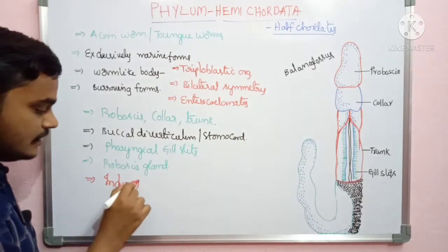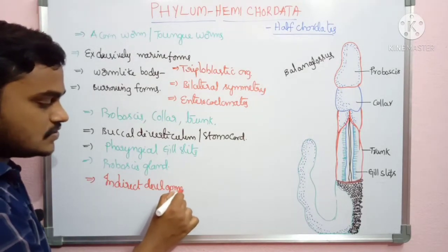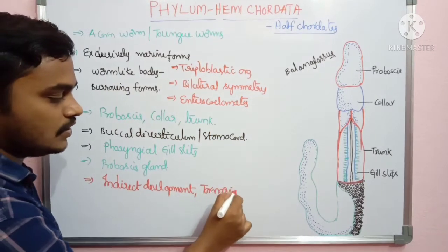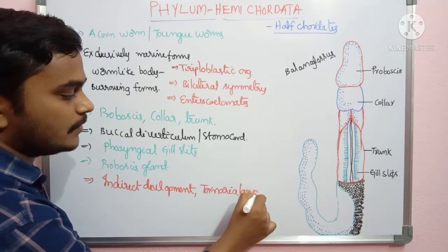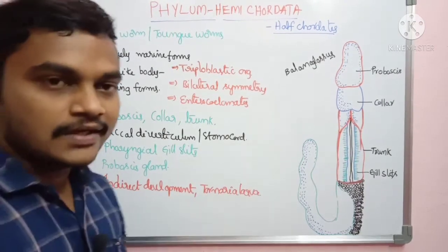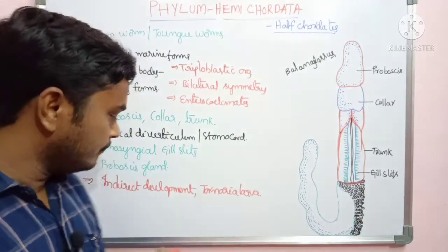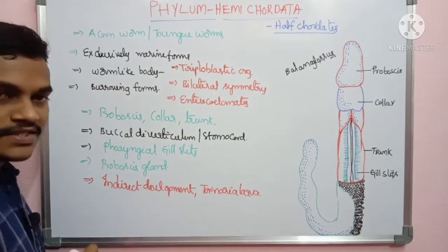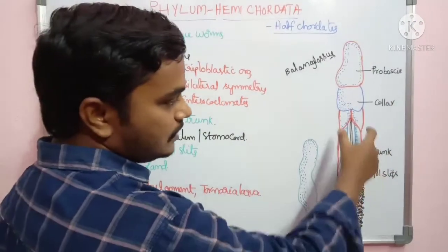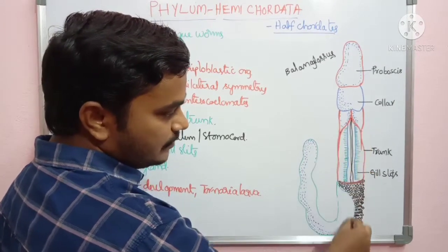There is indirect development in hemichordates, which includes a larval stage. The larva is called the tornaria larva. So indirect development with a tornaria larval stage is characteristic of hemichordates. The trunk region contains gill slits and the stomochord region, with the remaining portion being the trunk.